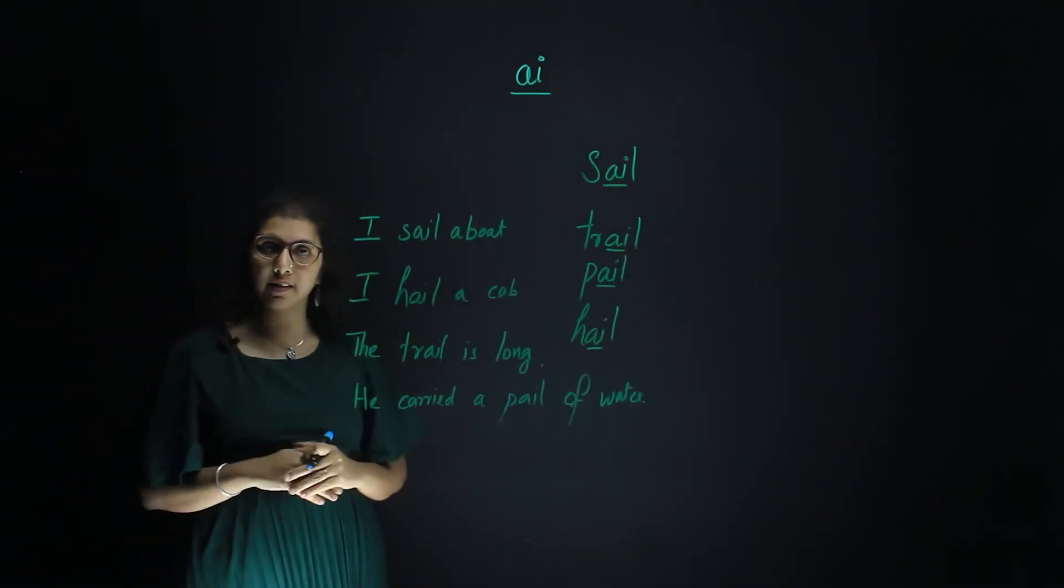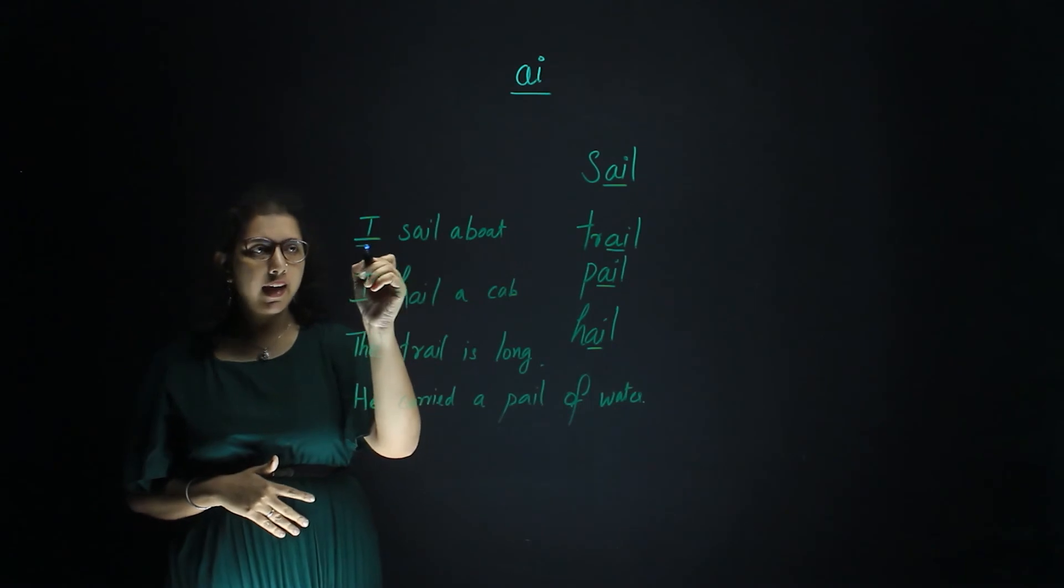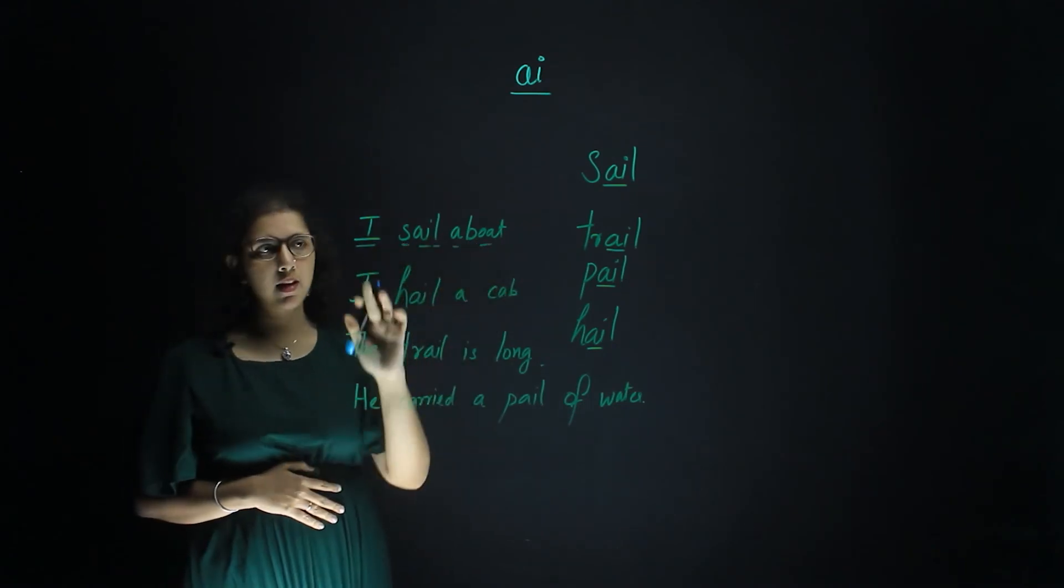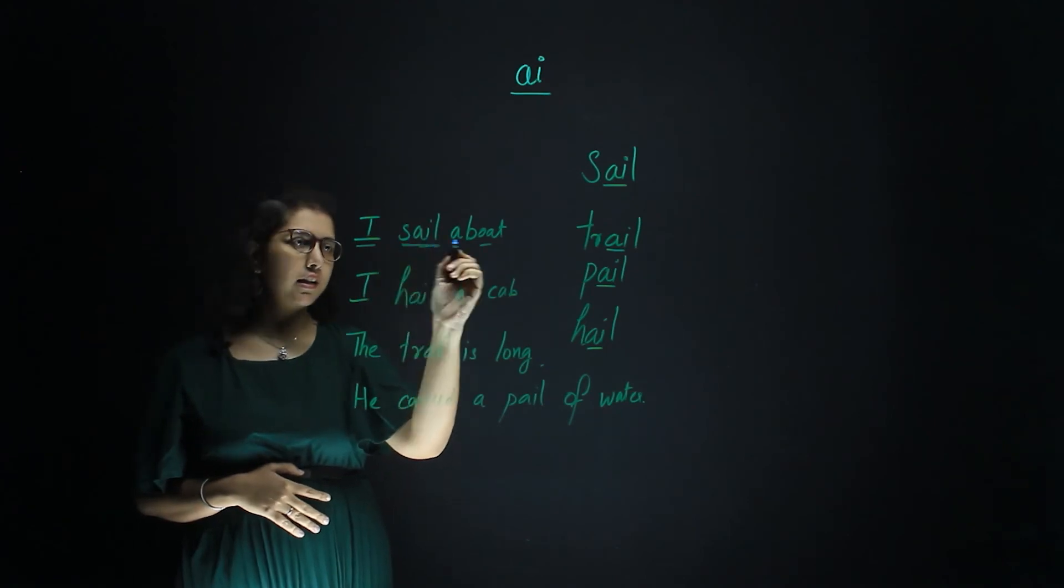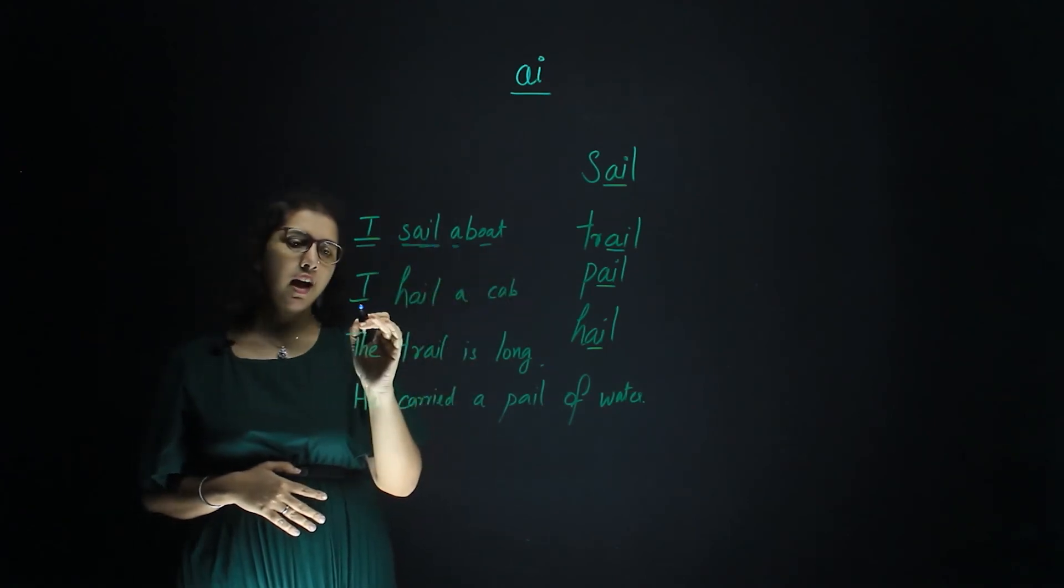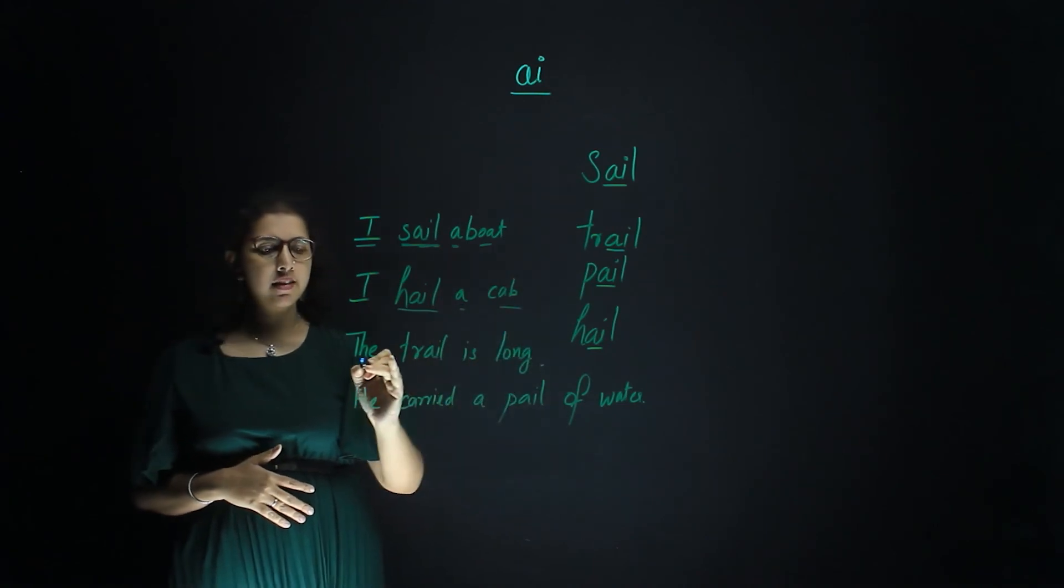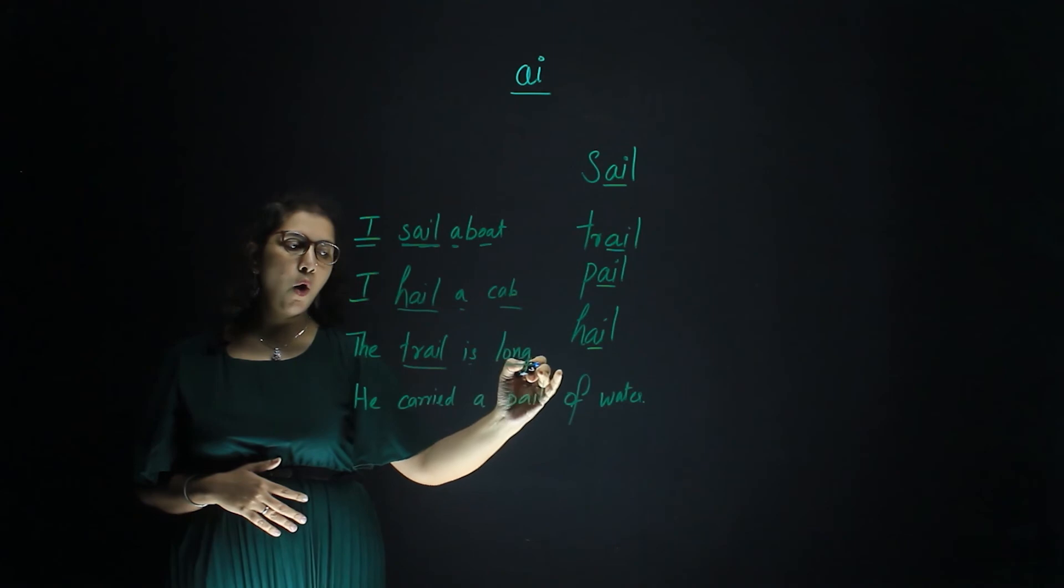Now let us start reading sentences with these words. I sail a boat. I hail a cab. The trail is long.